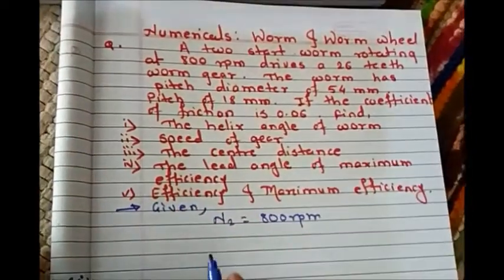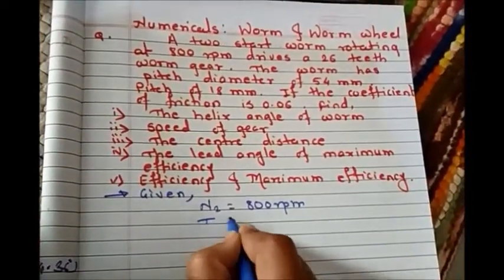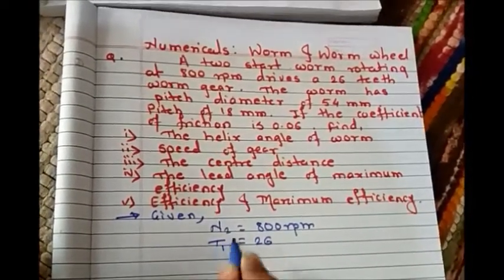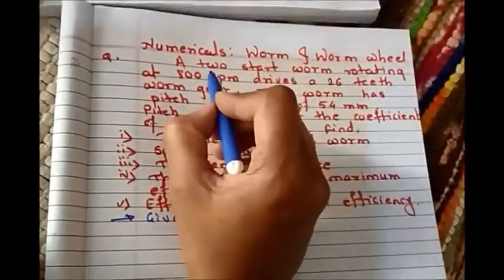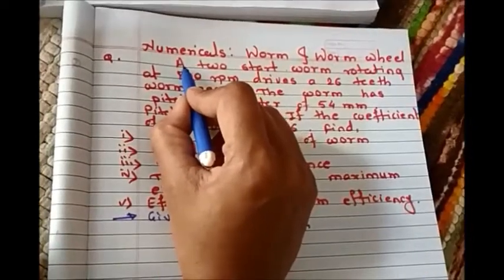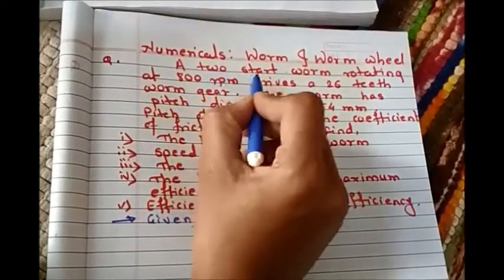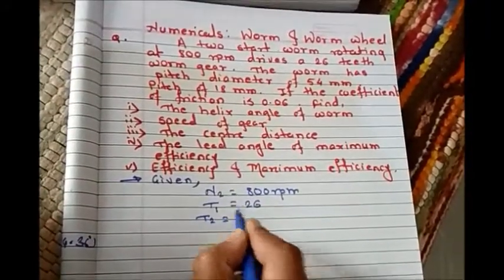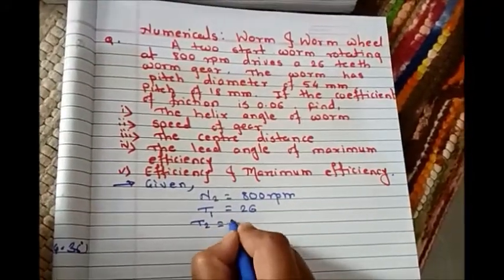The statement says a two-start worm, which means t2, the number of teeth of the worm, and the number of starts denoted by n equals 2.